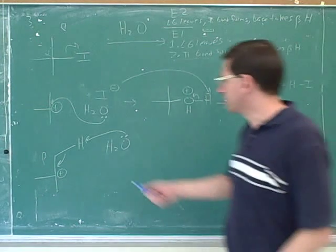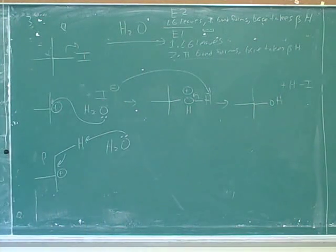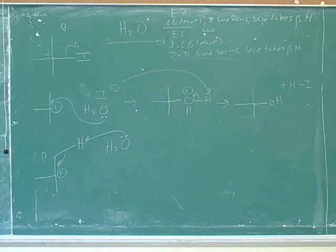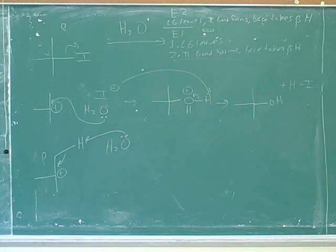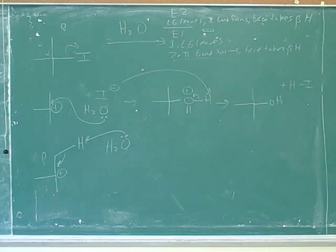Now let's see if we can draw the intermediates from this step. Now that we have these arrows, we should be able to draw the intermediate and the product we'll get from that step. When you're ready.